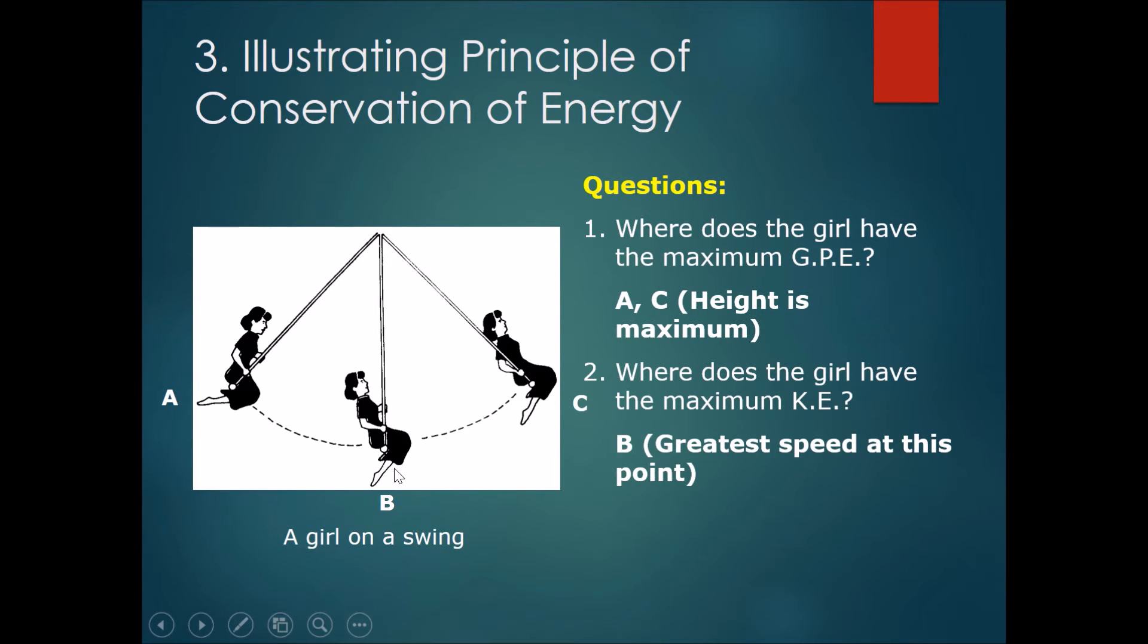B has the greatest speed at this point because this is where all the energy that the girl had from the GPE at the start is all converted into KE. At this point, it has the most energy converted into KE due to the loss of GPE. Therefore, B will be the fastest.